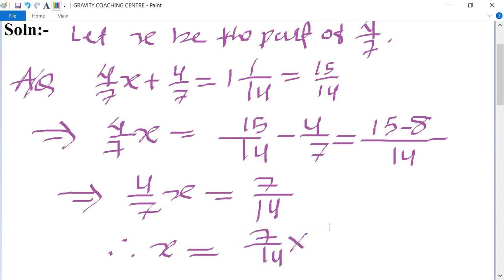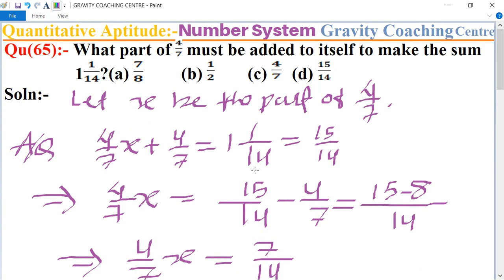Multiply 7/14 by 7/4, so we get 7/8, which is the required part of 4/7. So option A is the correct answer.